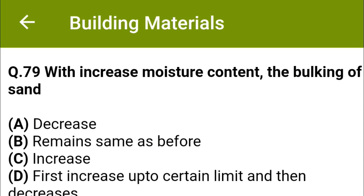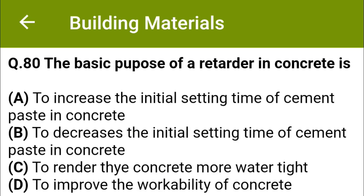With increased moisture content, the bulking of sand: option A, decrease; option B, remains same as before; option C, increase; option D, first increase up to a certain limit and then decreases. The correct answer is option D, first increase up to a certain limit and then decreases.